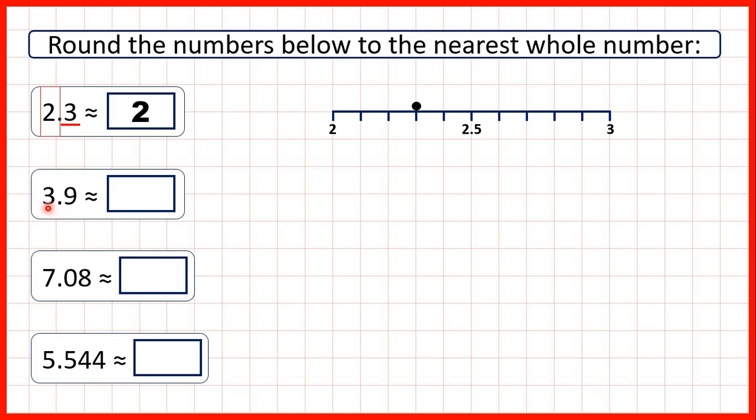Now we have 3.9. So to round to the nearest whole number, we circle the ones digit and look at the tenths. We have 9 tenths, and remember if the digit is 5 or more, we're rounding up. So 3.9 rounds to 4.